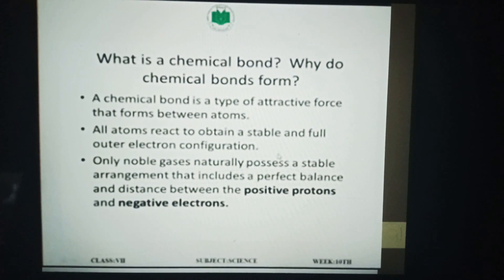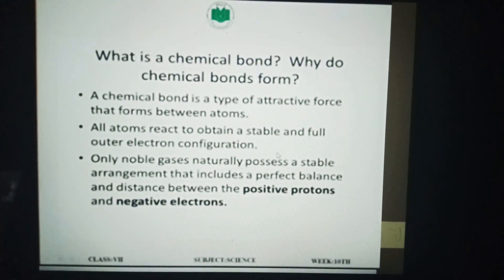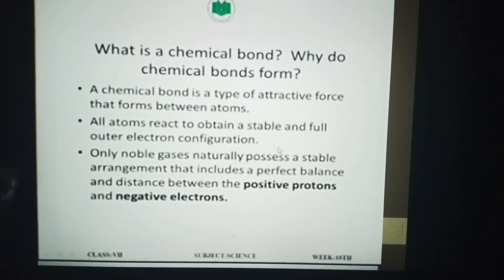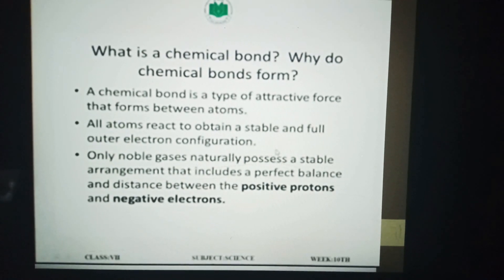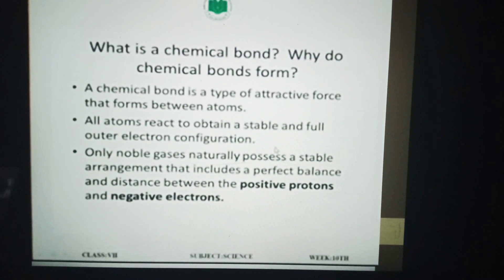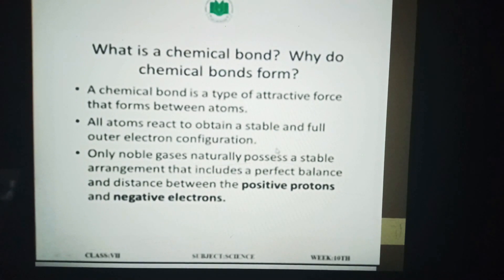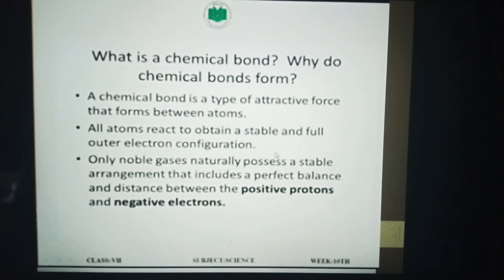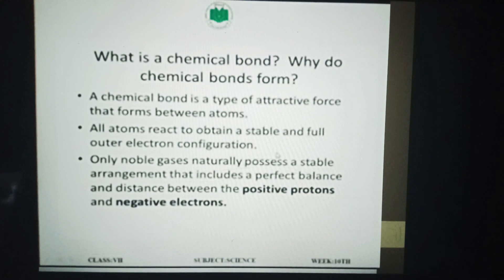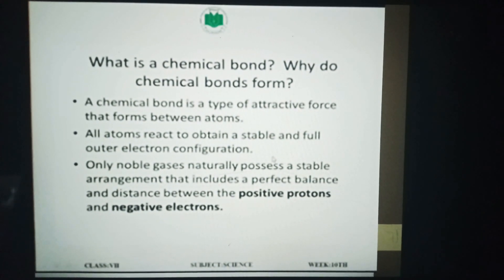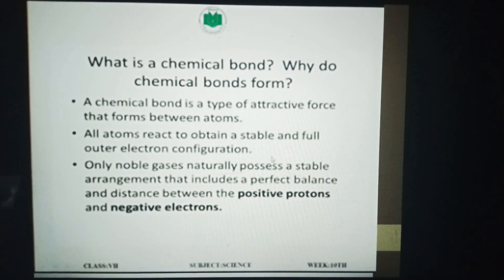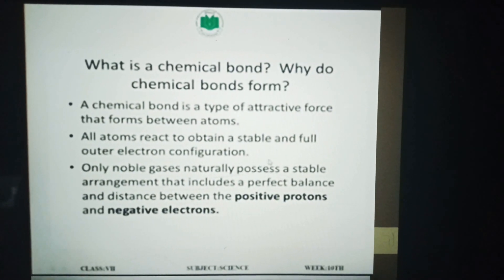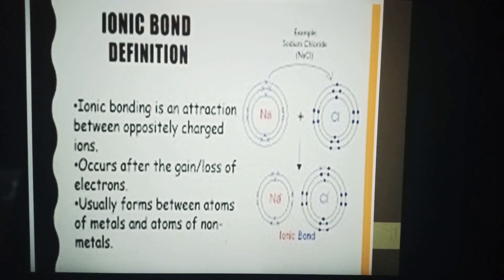So what is a chemical bond, and why do chemical bonds form? A chemical bond is a type of attractive force that forms between atoms. All atoms react to obtain a stable and full outer electron configuration. Only noble gases naturally possess a stable arrangement that includes a perfect balance and distance between the positive protons and negative electrons.